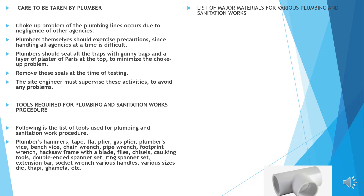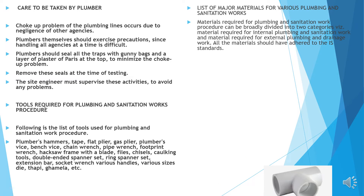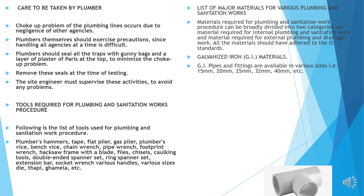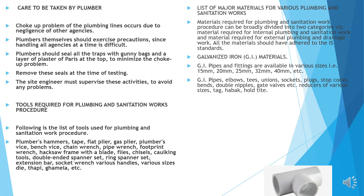List of major materials for plumbing and sanitation work. Materials required can be broadly divided into two categories: material required for internal plumbing and sanitation work, and material required for external plumbing and drainage work. All materials should adhere to higher standards. Galvanized materials: GI pipes and fittings are available in various sizes ranging from 15 to 40 mm — GI pipes, elbows, T, unions, sockets, plugs, etc.